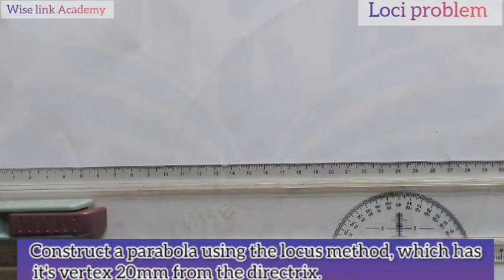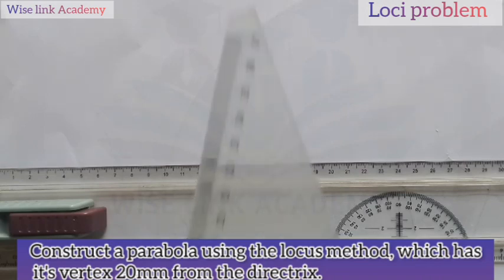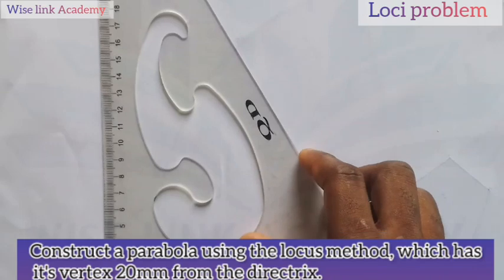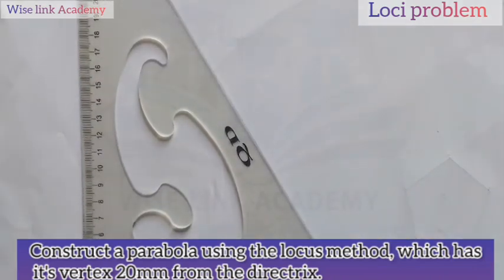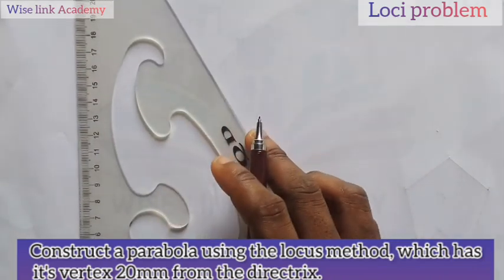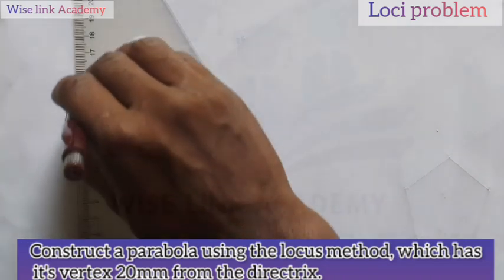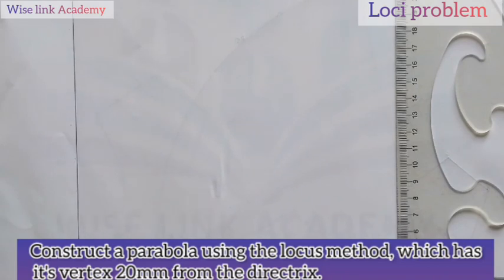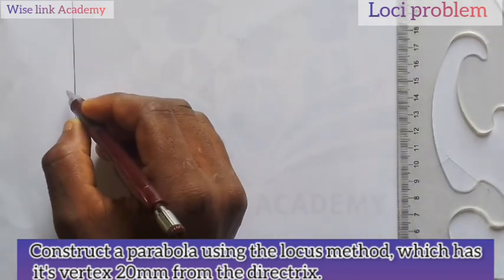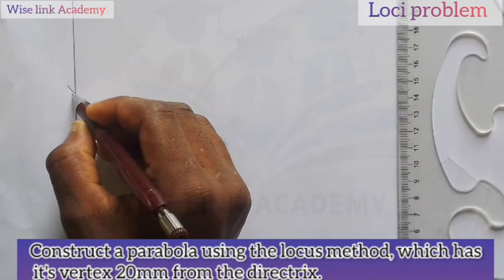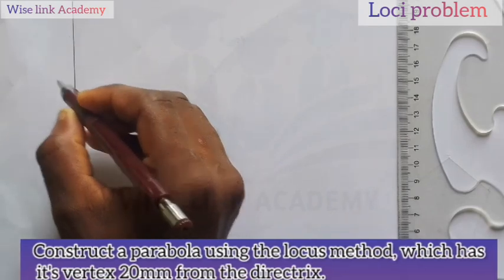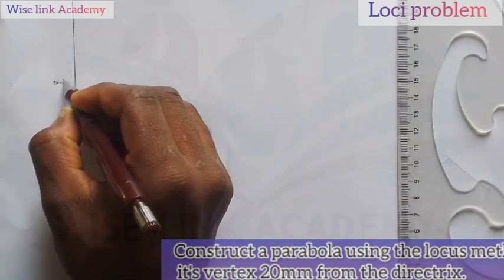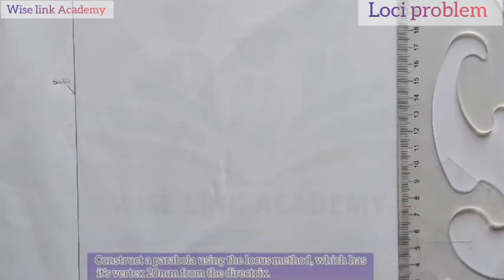Now, I first start to draw directrix. And we said the directrix is simply what? The vertical line. So, with the aid of mine, for the 60 degree, I will draw a vertical line this way. Drawing must be thick. Let me draw a thick vertical line. We call this directrix.